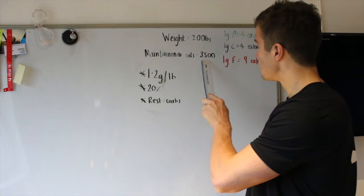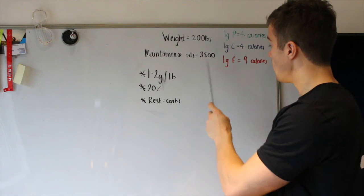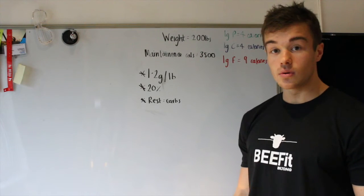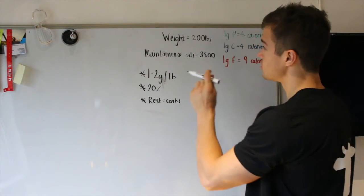Right, first of all, calories for your bulk. My maintenance calories is 3,500. As a rule of thumb, add 500 to that. So, I would go up to 4,000. So, we will go to 4,000 calories because that is 500 plus my maintenance.